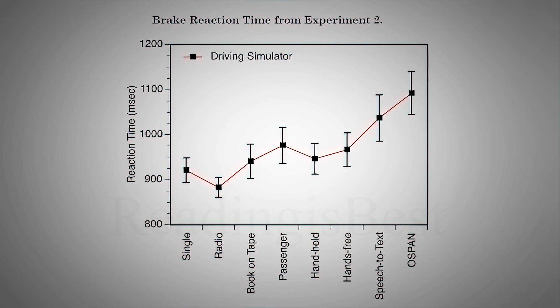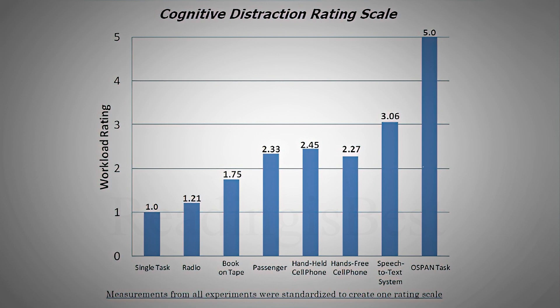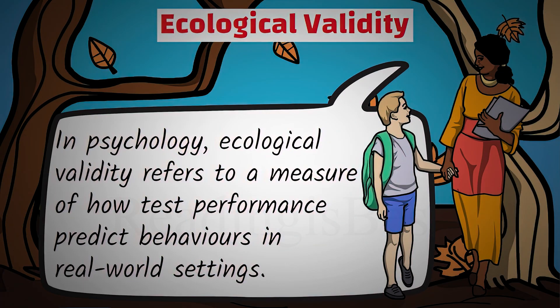Beside conducting this experiment in the laboratory and simulator, researchers also conducted it using an instrumented vehicle to replicate the real-world setting as much as possible. The patterns observed in the three experiments were found to be strikingly consistent, showing results from the laboratory and driving simulator were in good agreement with studies of cognitive distractions on the roadway. Since each setting showed a systematic increase in cognitive workload as participants performed different in-vehicle activities, we might be tempted to conclude the experiment is more ecologically valid. But what we have to understand is that the main determining factor of ecological validity is whether the findings of the study can be generalized to real-life settings or not.